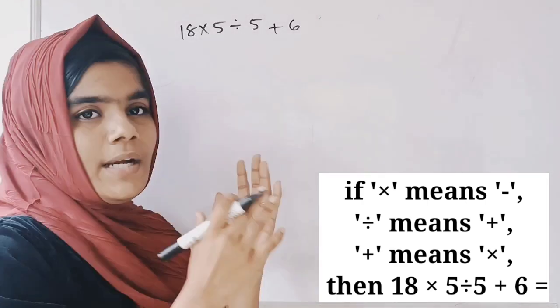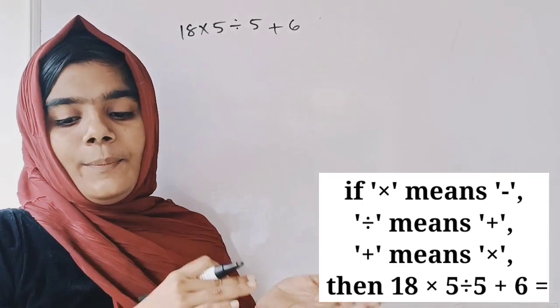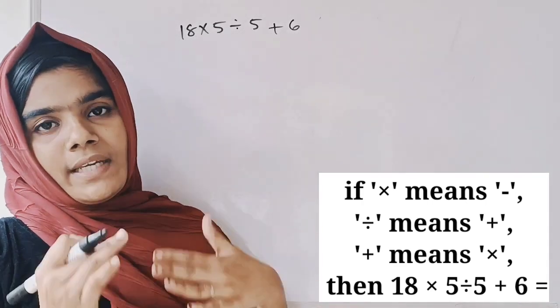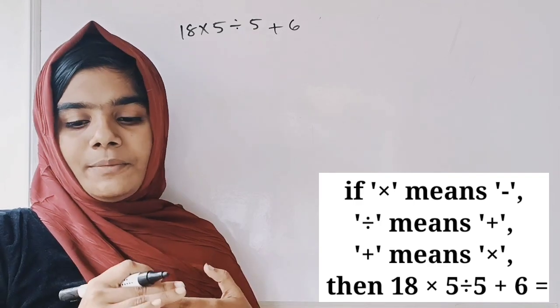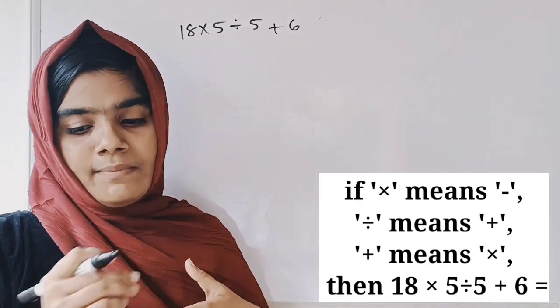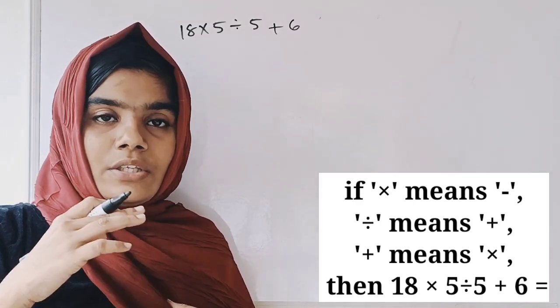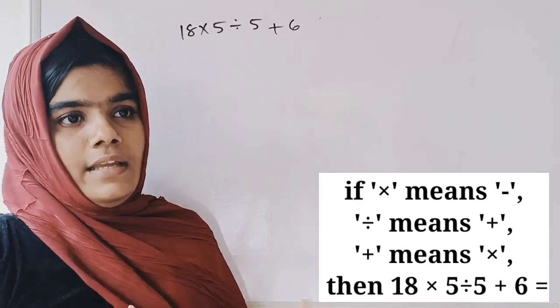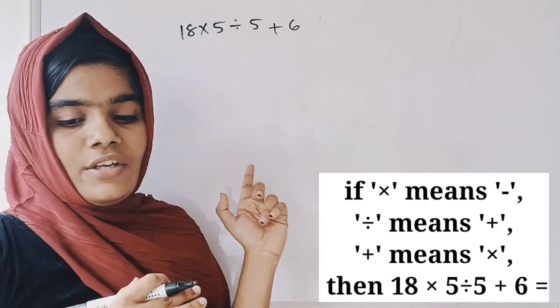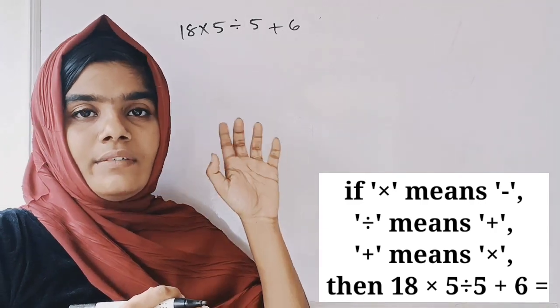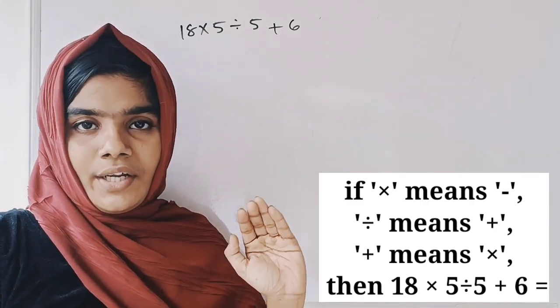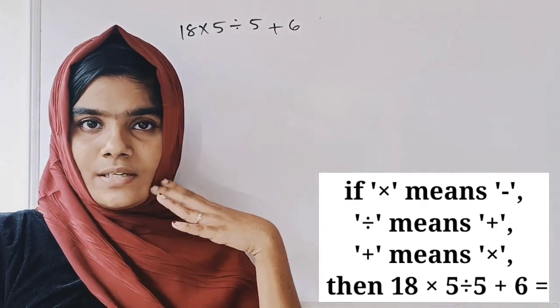Now, applying the substitutions: 'into' means minus, 'divided by' means plus, and 'plus' means into. So for 18 into 5 divided by 5 plus 6, we substitute each operator accordingly.